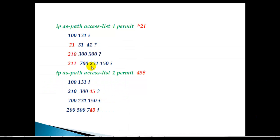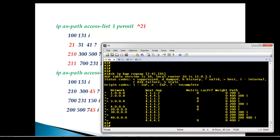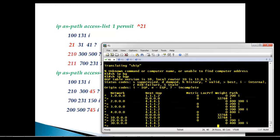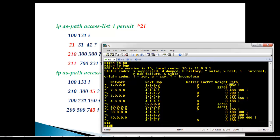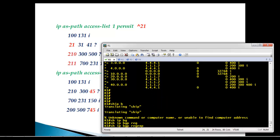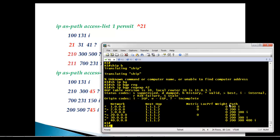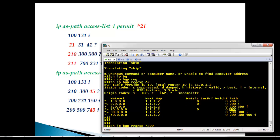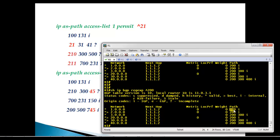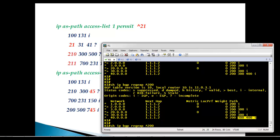To verify: 'show ip bgp regular-expression ^2' displays all prefixes whose AS path starts with 2. Using '^200' shows all prefixes starting with 200 — it can be just 200, or 200 300, or 200 300 400, and so on. It matches only based on the beginning of the AS path. For example, a route in AS100 with AS path starting from 200 will appear in results.